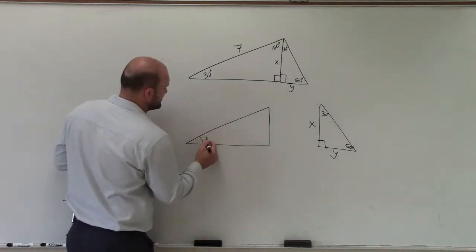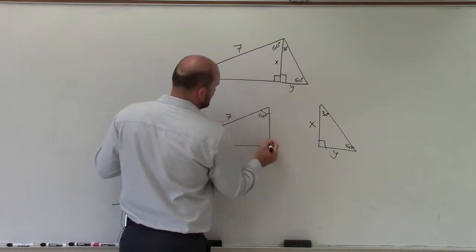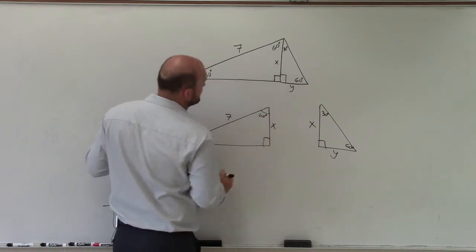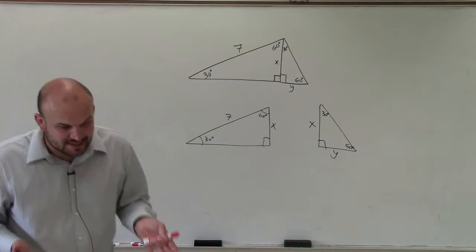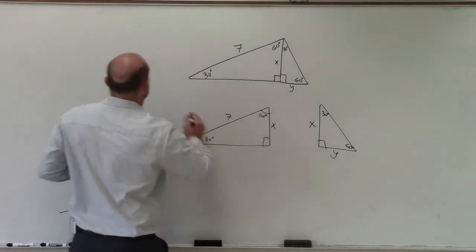Over here, the only information I have is my hypotenuse is 7. That's 60 degrees, and that's 90, and that's x. So at least for this larger triangle, we have the hypotenuse, and we want to find the shorter leg.